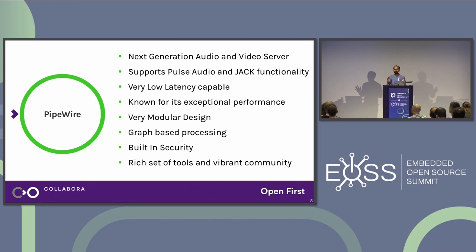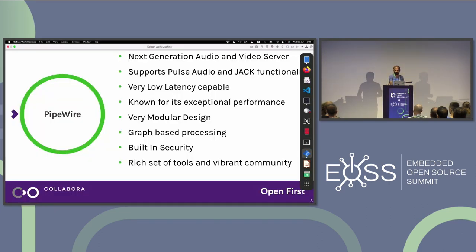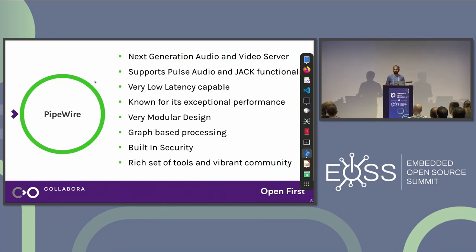PipeWire's design is very modular — this is one thing I boast about to colleagues from previous companies. One exceptional thing is the object abstraction. Be it clients, devices, apps, ports, links, or whatever — everything is an object inside PipeWire. That is a very powerful abstraction. It gives a lot of flexibility.